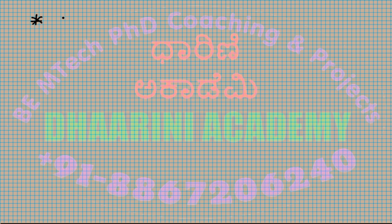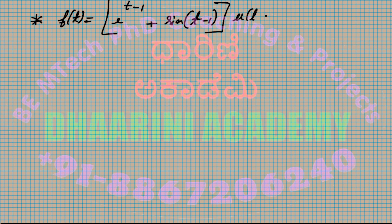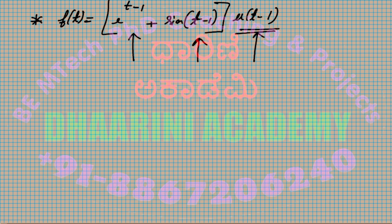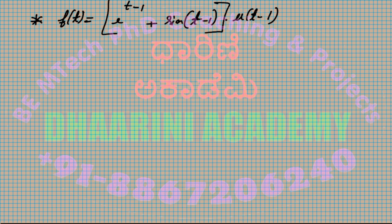Example 1: f(t) = e^(t minus 1) plus sin(t minus 1), multiplied by u(t minus 1). The trick is to identify that everywhere we have t replaced by (t minus 1) and the unit step function is also shifted. So we define g(t) by replacing every (t minus 1) back with t: g(t) = e^t plus sin(t).